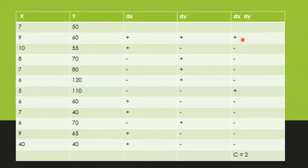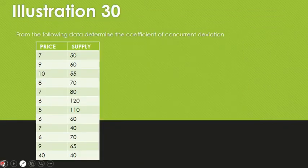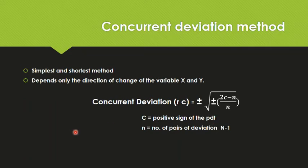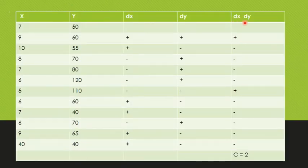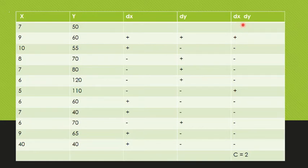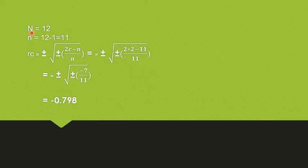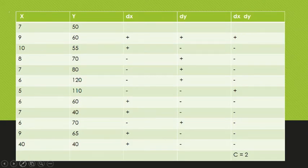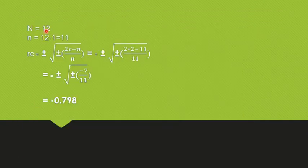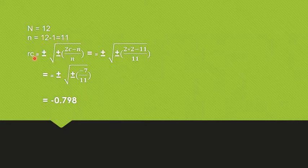Now, in dx into dy, the positive sign of the product gives us c. C is the number of positive signs of the product dx into dy. That count is 1, 2 — so c is equal to 2. Now, the total number of values is N equal to 12. Therefore, small n is equal to N minus 1, that is 12 minus 1, which equals 11.